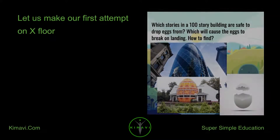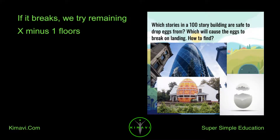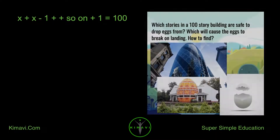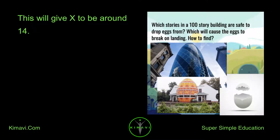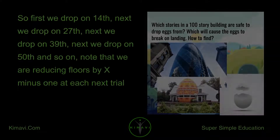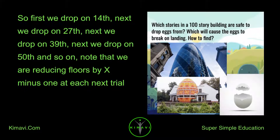Let us make our first attempt on floor X. If it breaks, we try the remaining X minus 1 floors. The equation X + (X-1) + ... + 1 = 100 gives X to be around 14. So first we drop on the 14th floor, next on the 27th, next on the 39th, next on the 50th, and so on. Note that we are reducing the interval by X minus 1 at each subsequent trial.